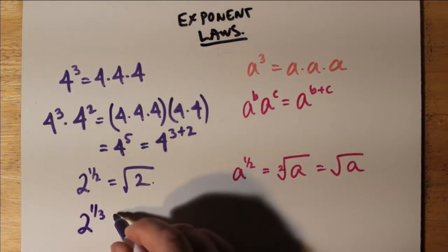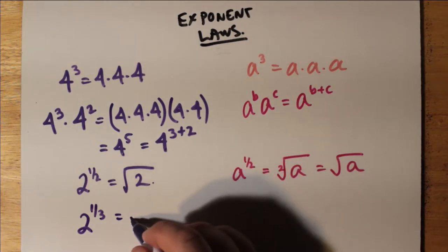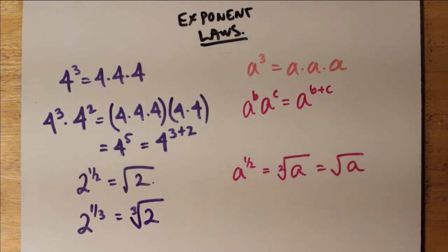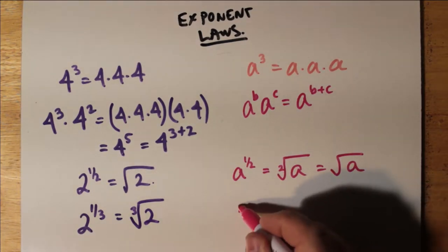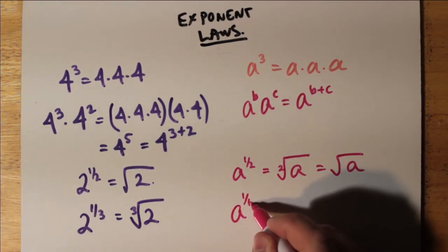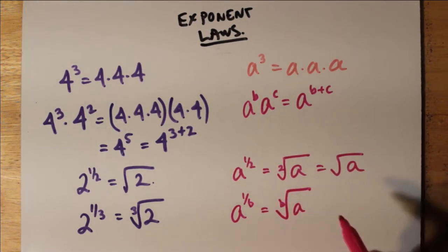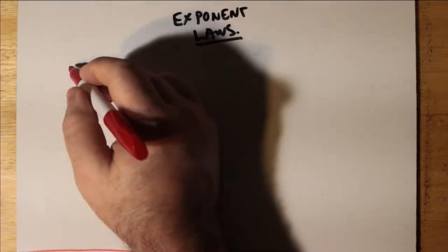Well, we can't do the same thing with 2 to the 1 third. That's the cube root of 2, and we have to write the 3 inside the square root on the upper part. So a to the 1 over b is just for anything not equal to 2. We have to write in that whatever that b is, and that would be the bth root of a.